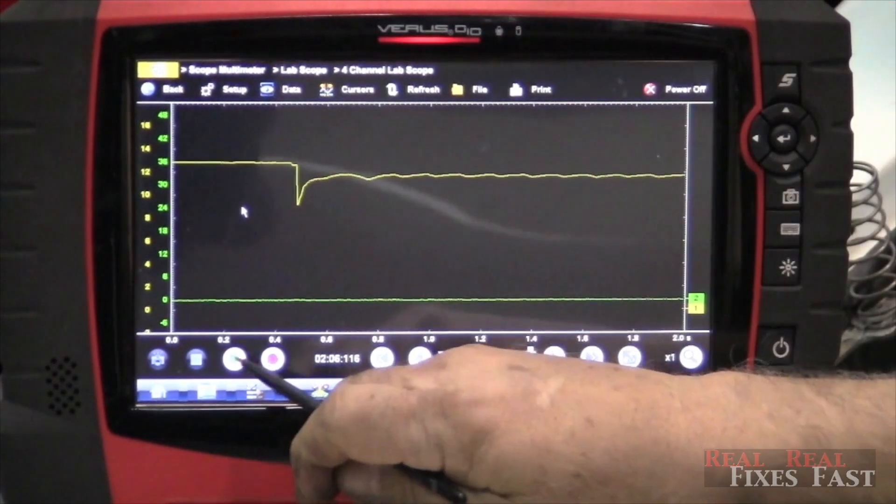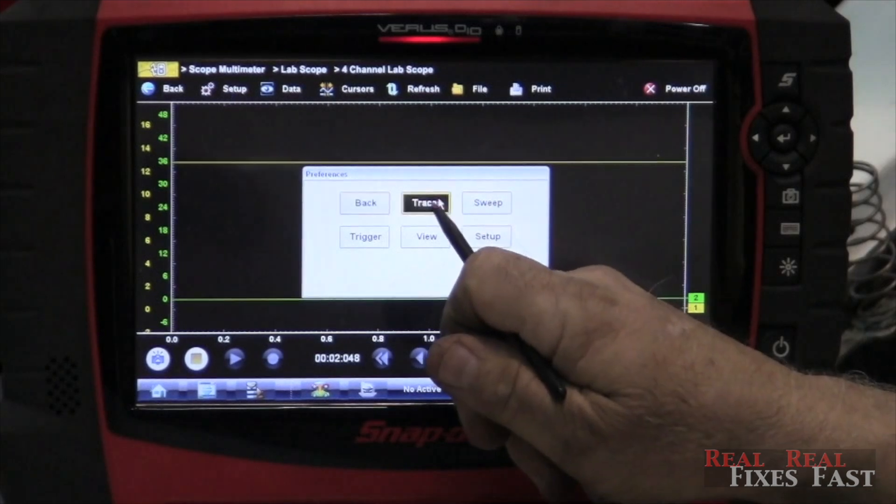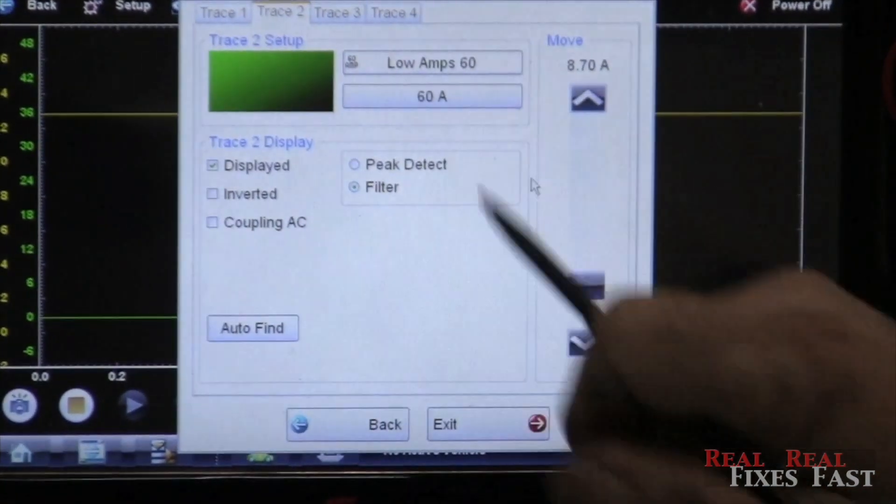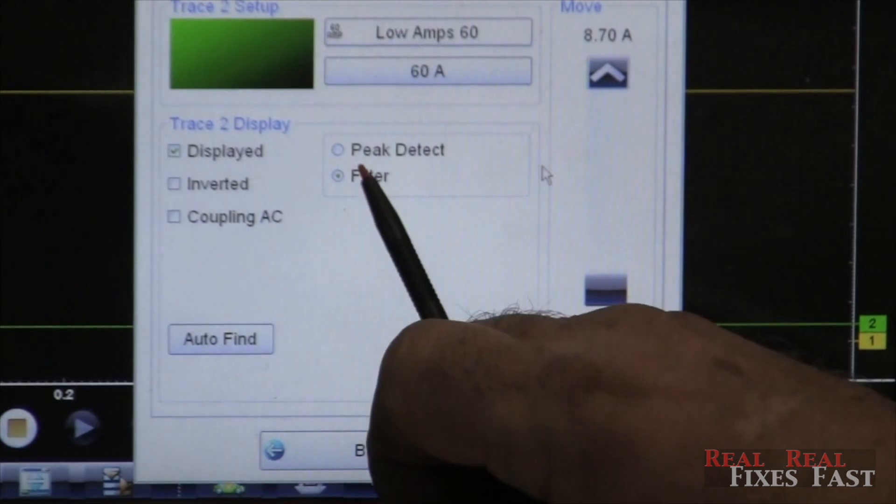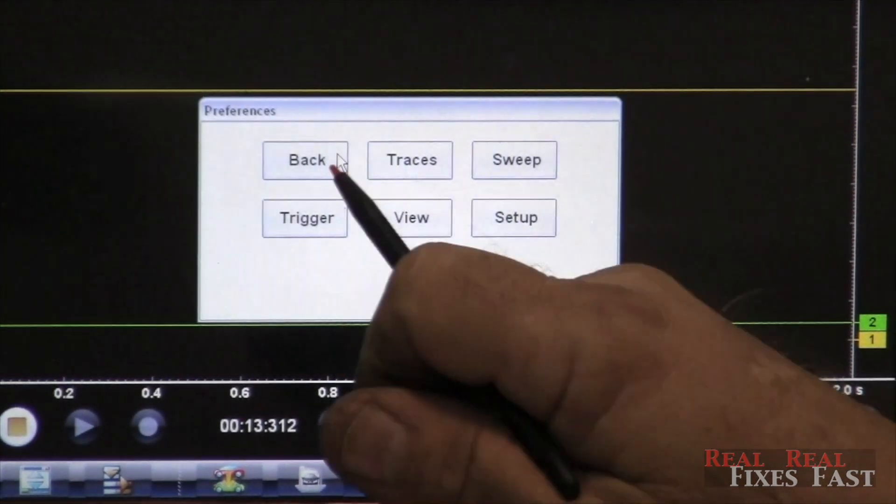Now I'm going to take this off of pause here. I'm going to go into setup and traces. Trace number two I'm going to set up for low amp, 60 amps. Also we're going to put the filter on. Then we go back and we're ready to go.